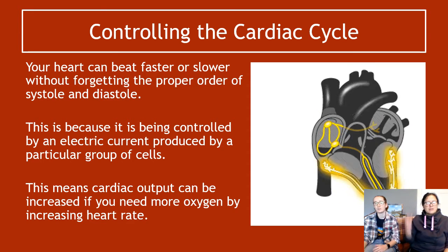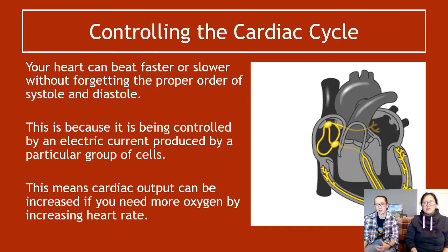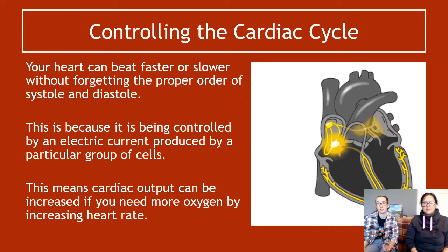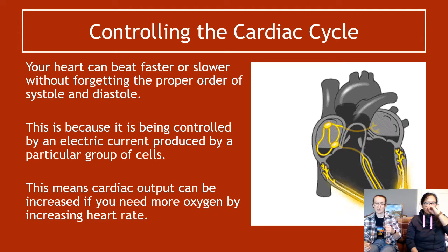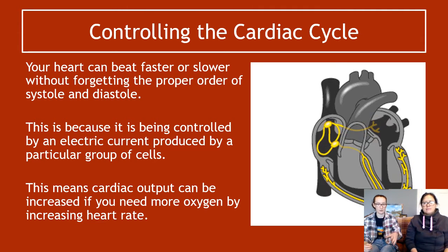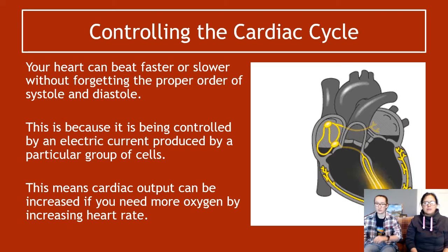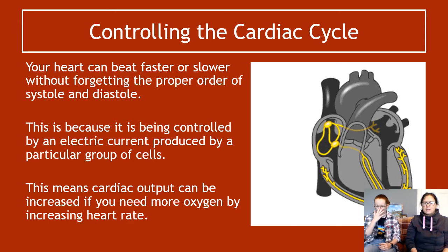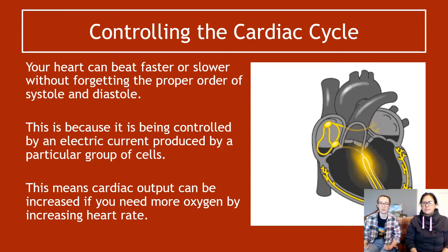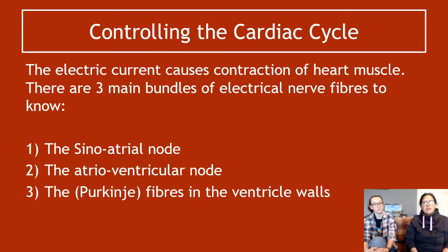Your heart is basically controlled by an electric current — that is why you are alive. There is an electric current responsible for telling your heart rate to go faster or slower depending on what your body needs. Cardiac output can be increased if you need more oxygen, or decreased if you need less blood flow, and it's all down to electrical signaling. The electric current causes contraction of the heart muscle in a particular order.